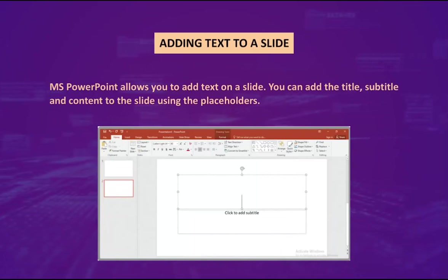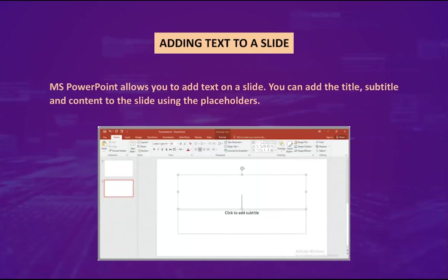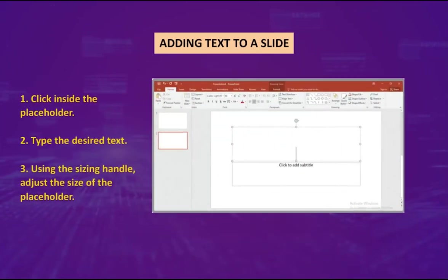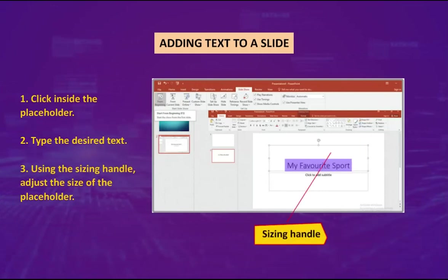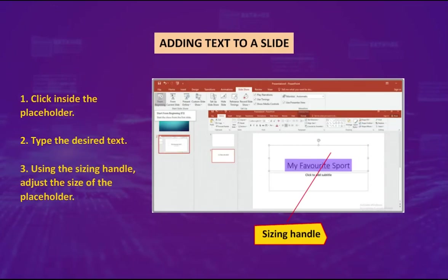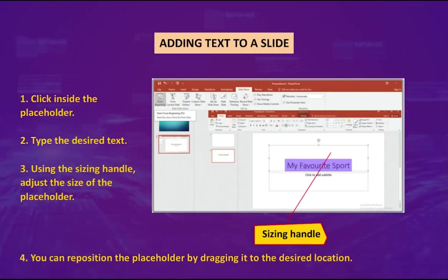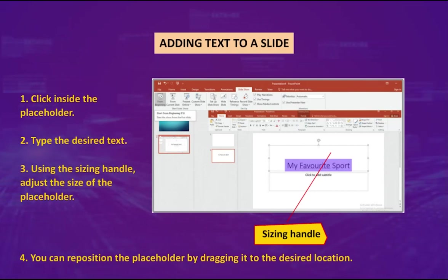Adding text to a slide: MS PowerPoint allows you to add text on a slide. You can add the title, subtitle, and content to the slide using the placeholders. Steps: one, click inside the placeholder; two, type the desired text; three, using the sizing handle, adjust the size of the placeholder; four, you can reposition the placeholder by dragging it to the desired location.